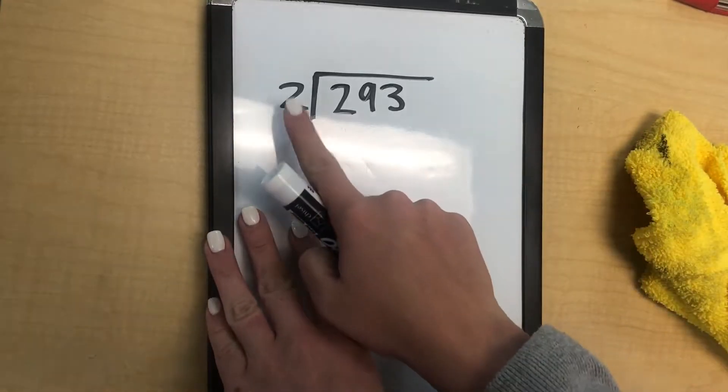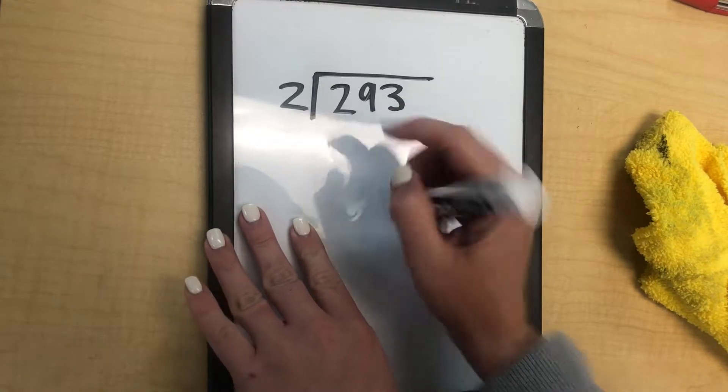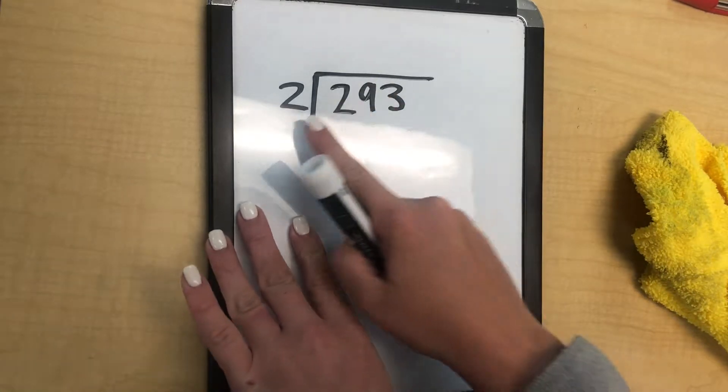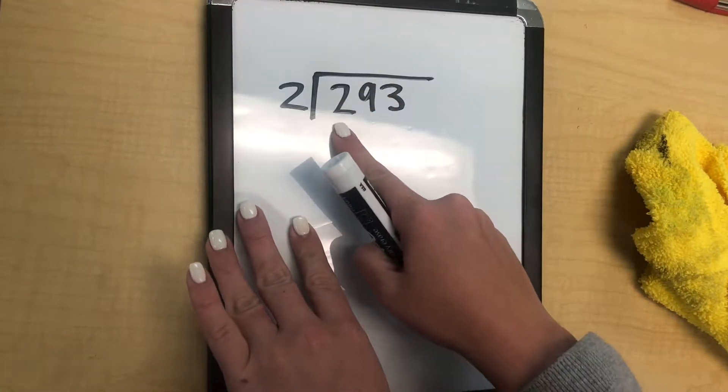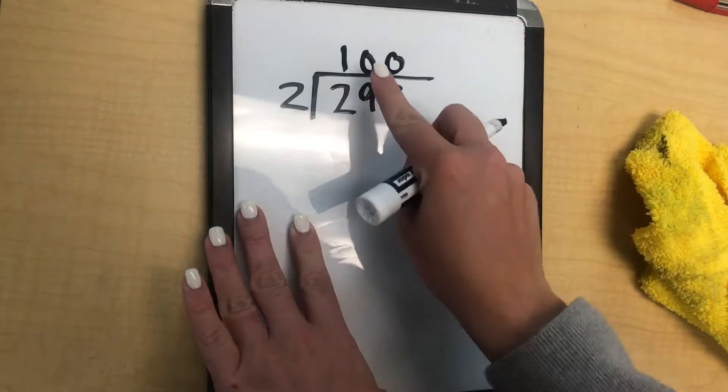So we start by doing how many times does 2 fit into 200, since this 2 is in the 100's place. So what times 2 equals 200? Well, 100 times 2 equals 200.